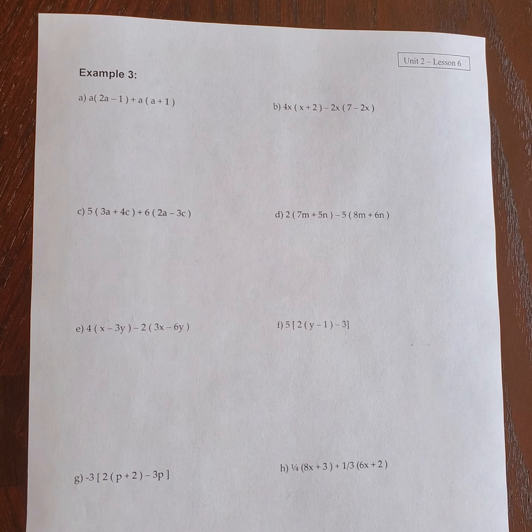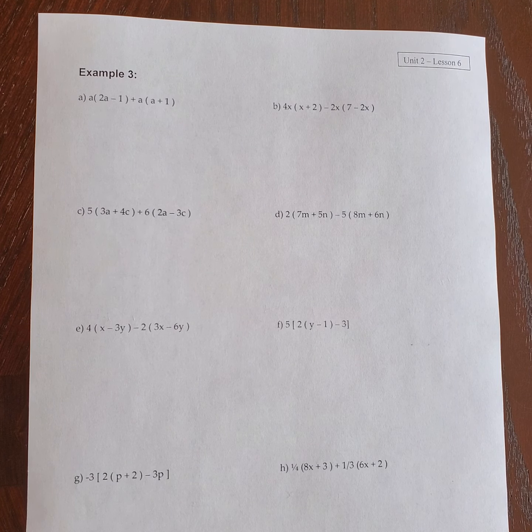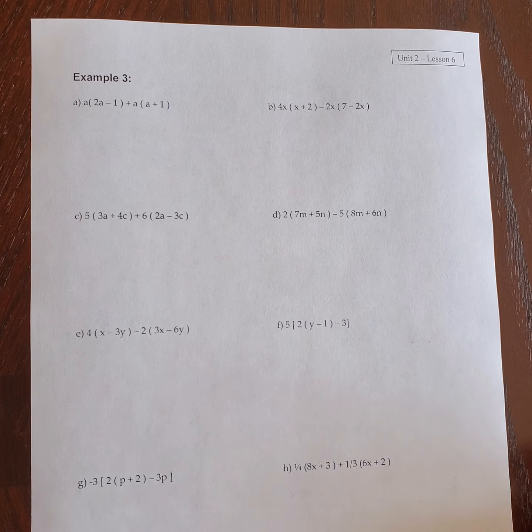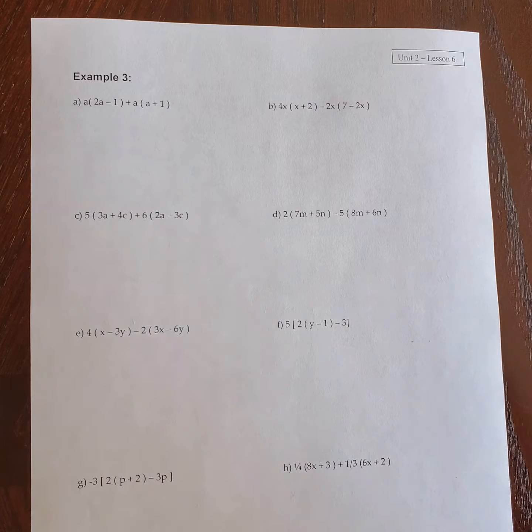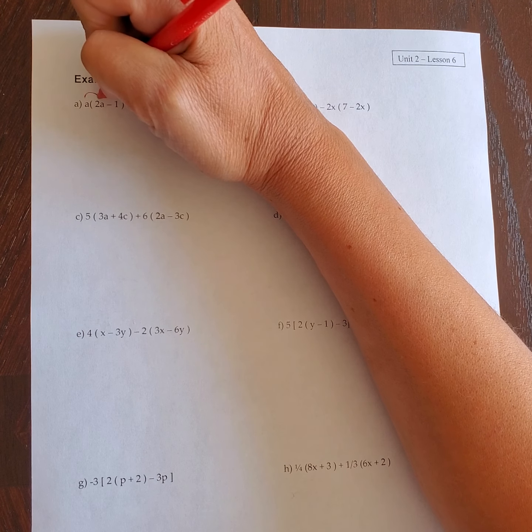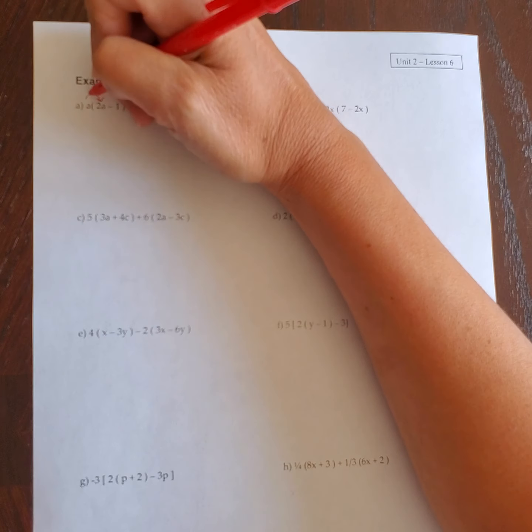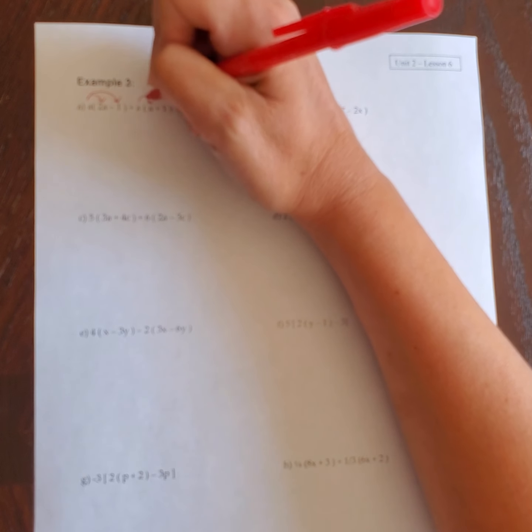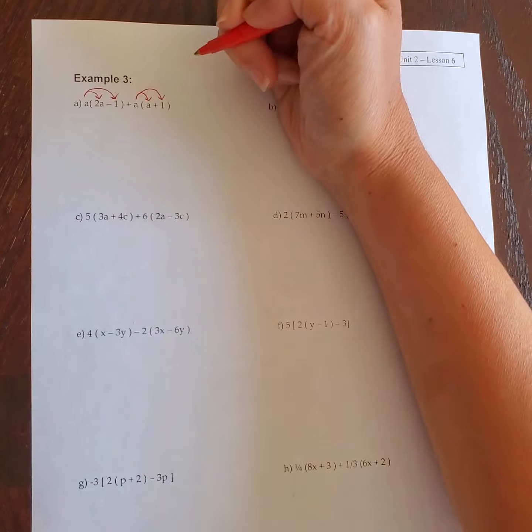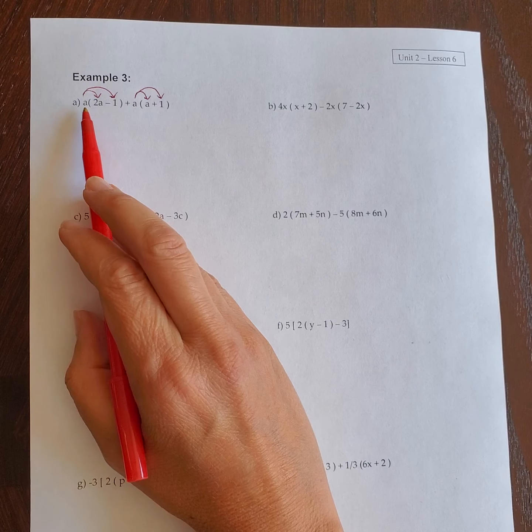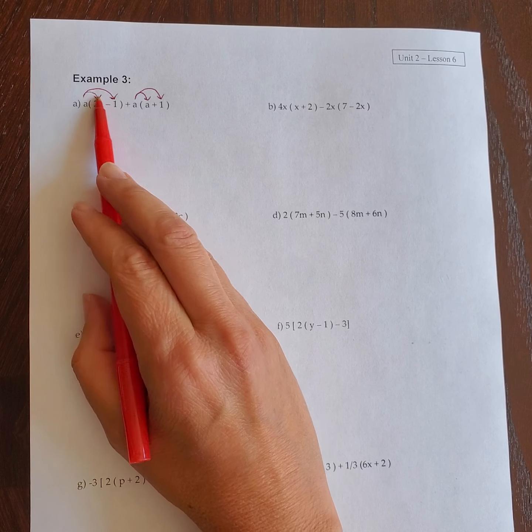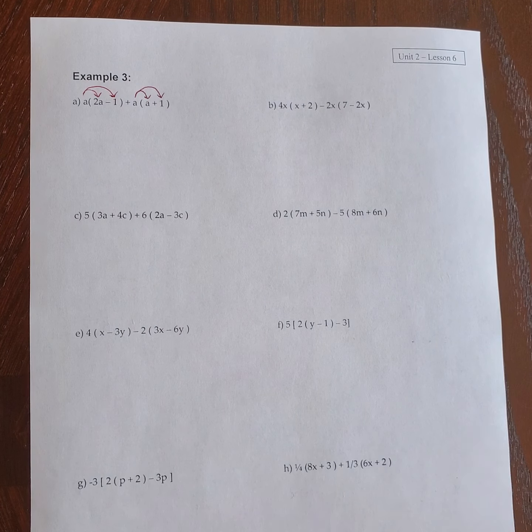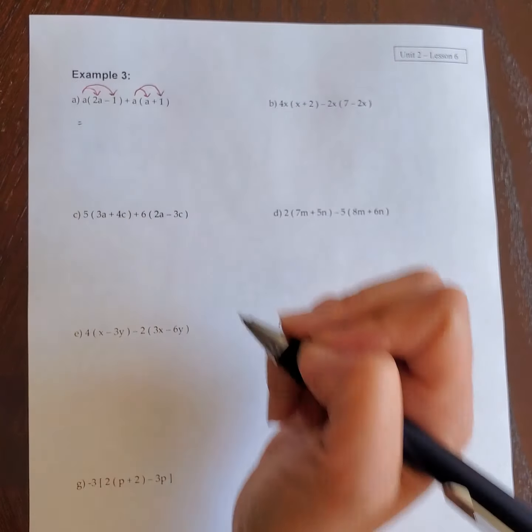We're going to continue on with some more examples of the distributive property. I find it helpful to put in arrows to show what I'm distributing. Remember the monomial that you're distributing only goes to the bracket that is behind it. So this a goes to this bracket, this a goes to this bracket, and then you just do the multiplication.